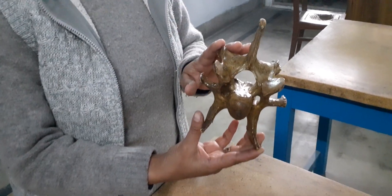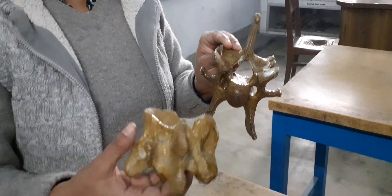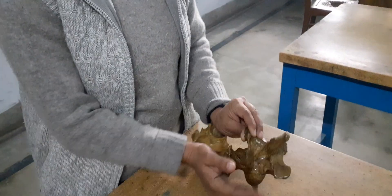This is the 6th cervical vertebra of the bovine. I have shown you the typical cervical vertebra and in this typical cervical vertebra,